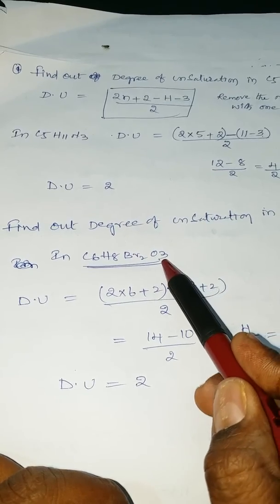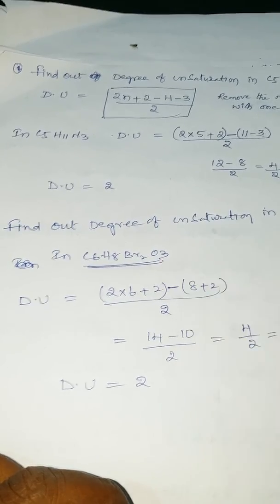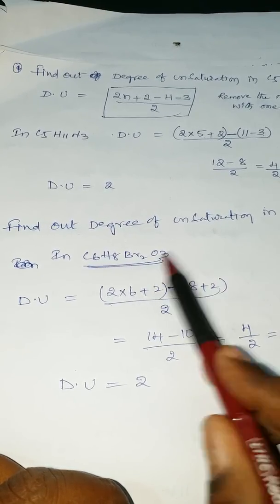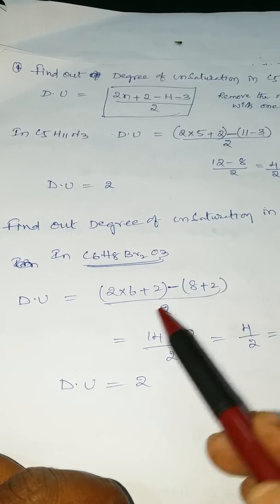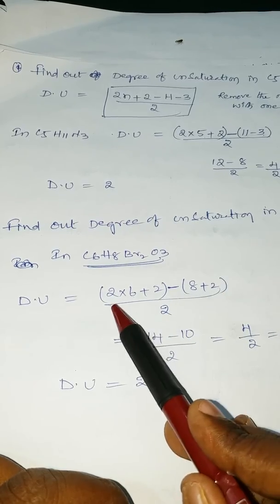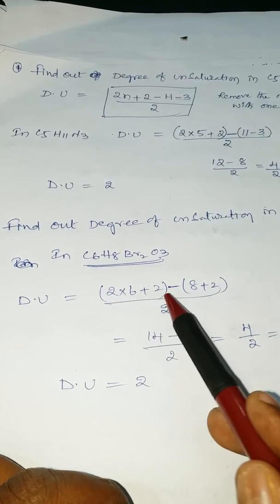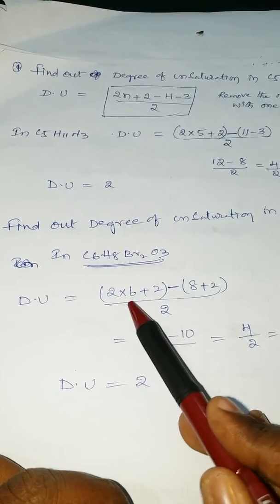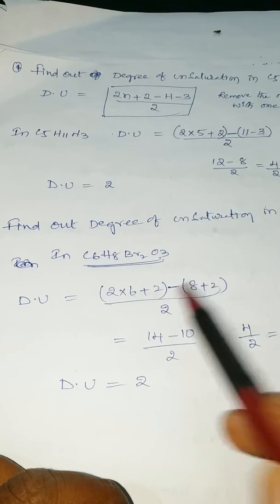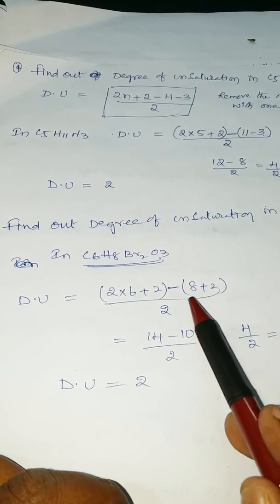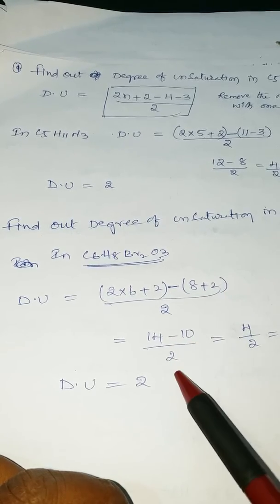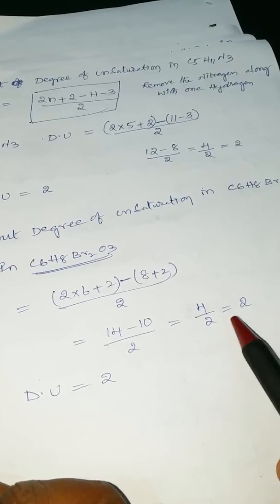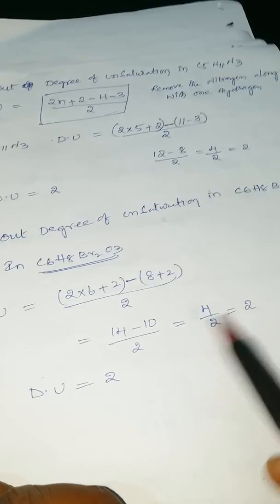Here, 2 halogens are present, so addition of 2. There are also 3 oxygens, but oxygens are not considered in the formula. So: 2 into 6 plus 2, that is 12 plus 2, minus 8 plus 2, which gives 4 divided by 2, equal to 2.